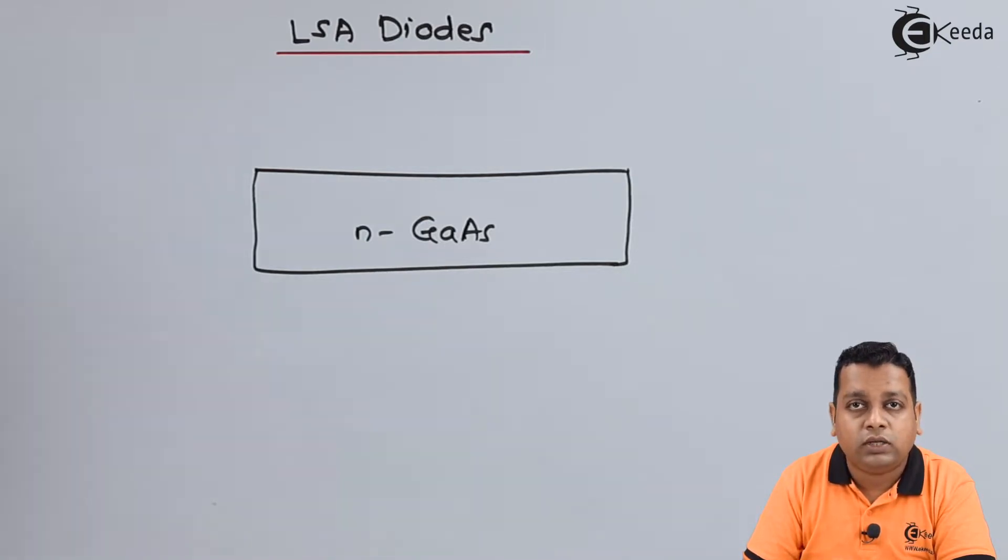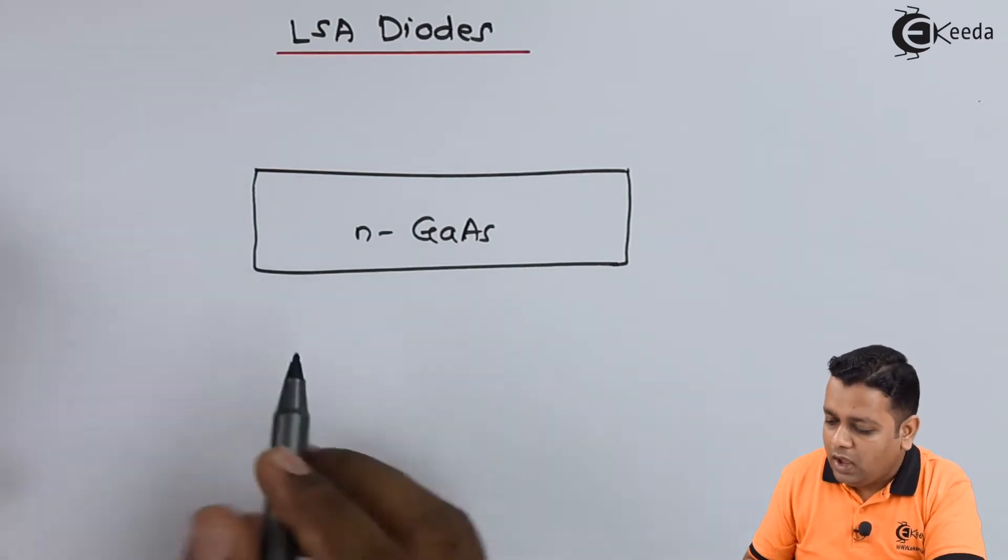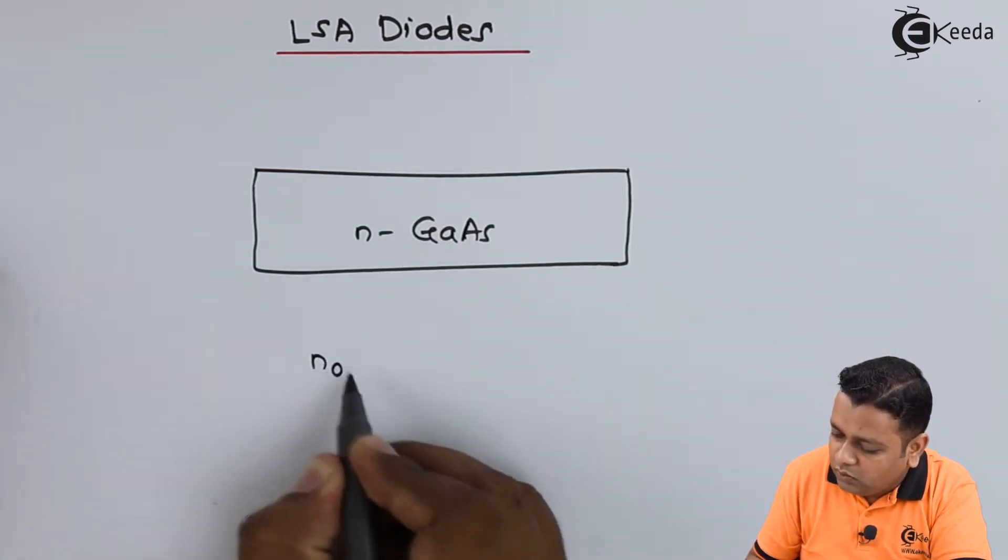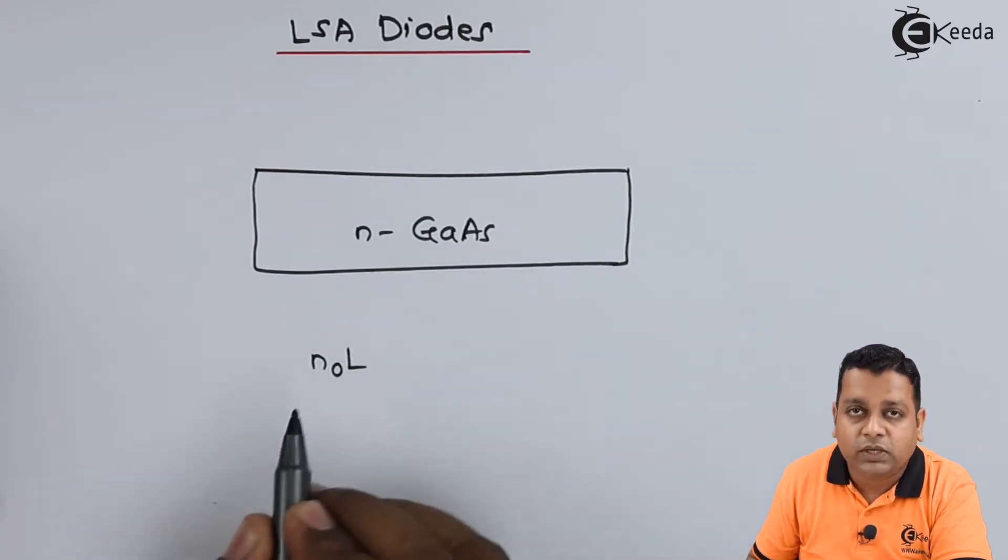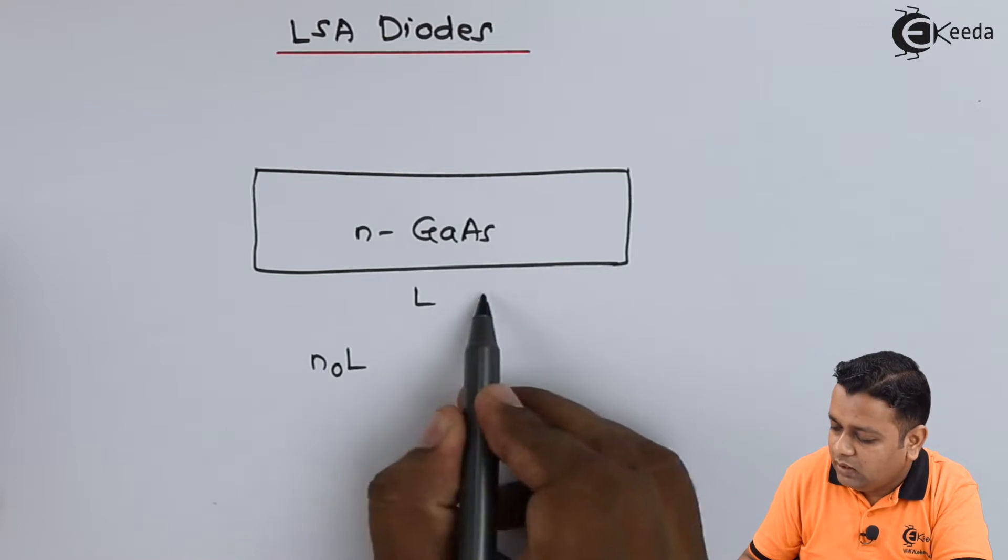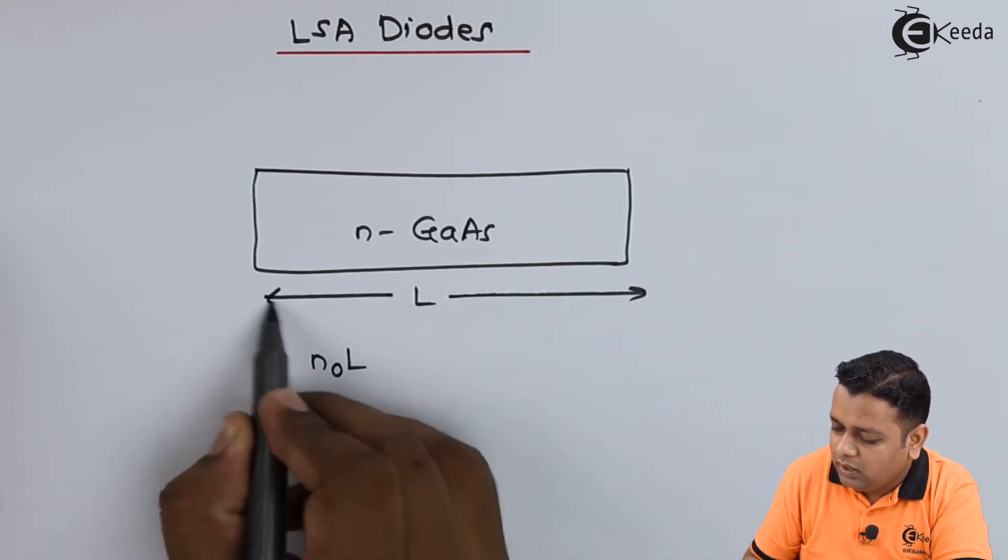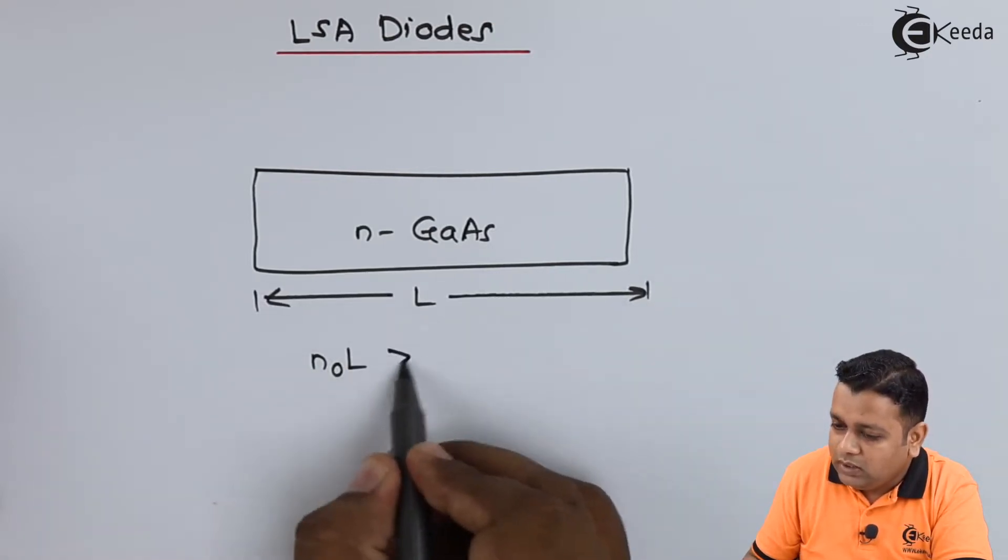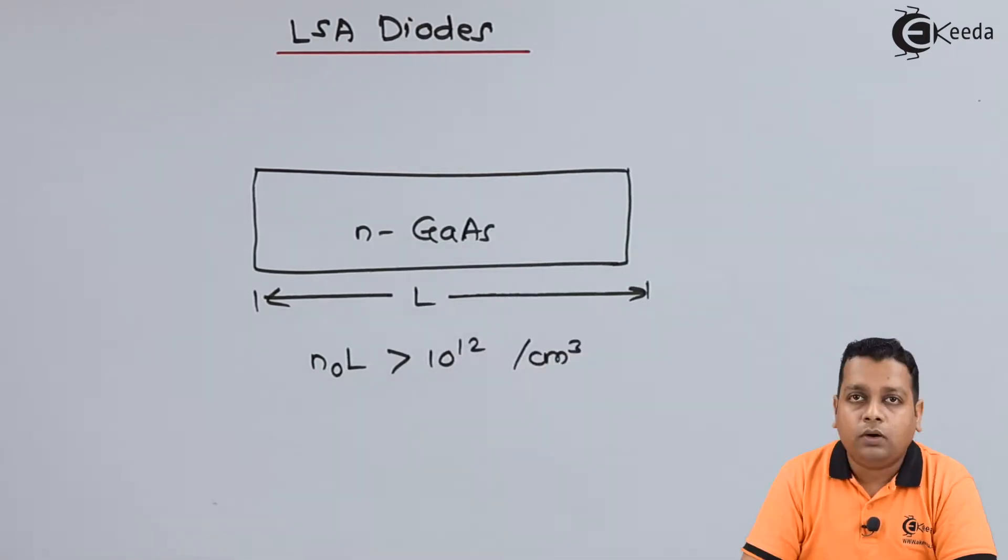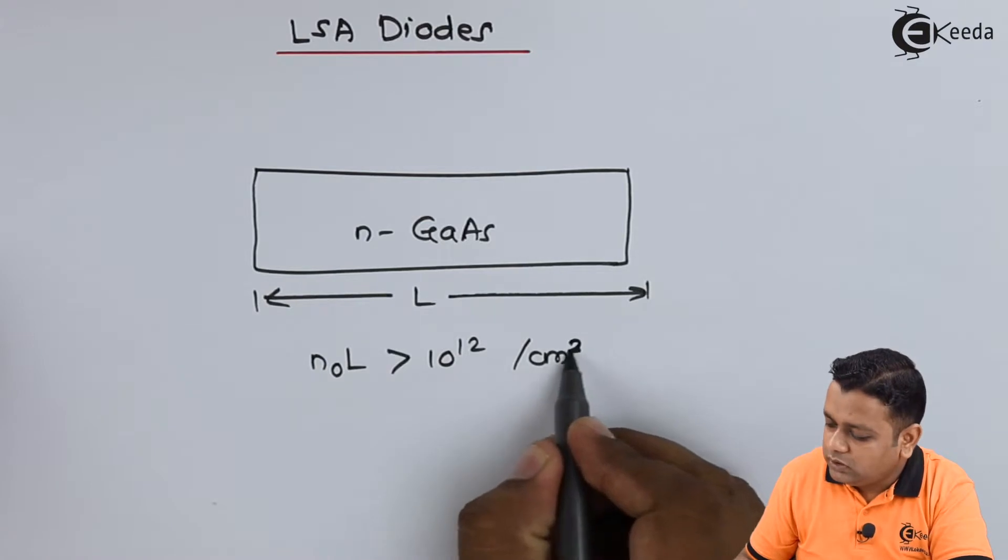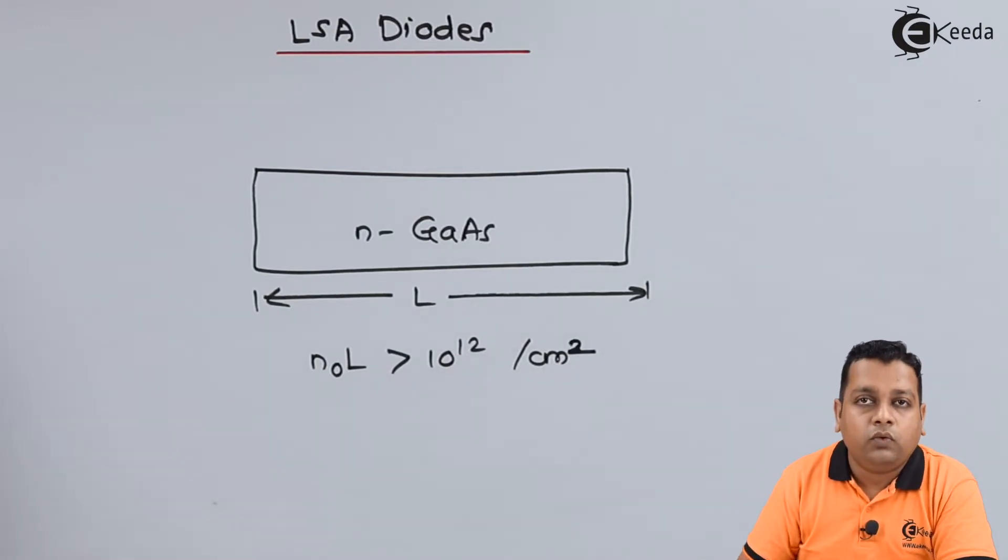To operate it into the LSA mode, we have the multiplication of the doping concentration n0 with the specimen length capital L, denoted in the diagram, that is greater than 10 raised to the power 12 per centimeter square. We have another parameter to decide whether the gun diode is operating into the LSA mode or not.